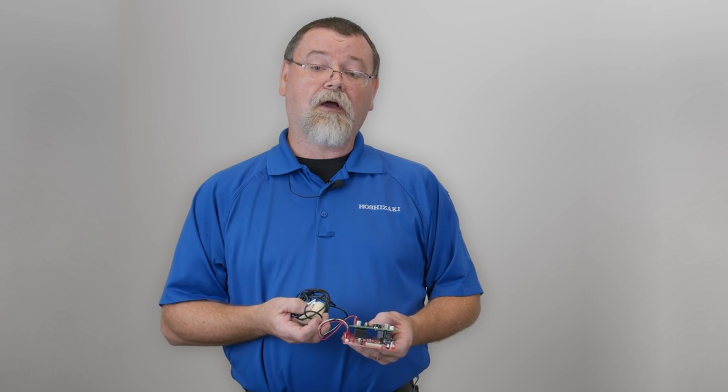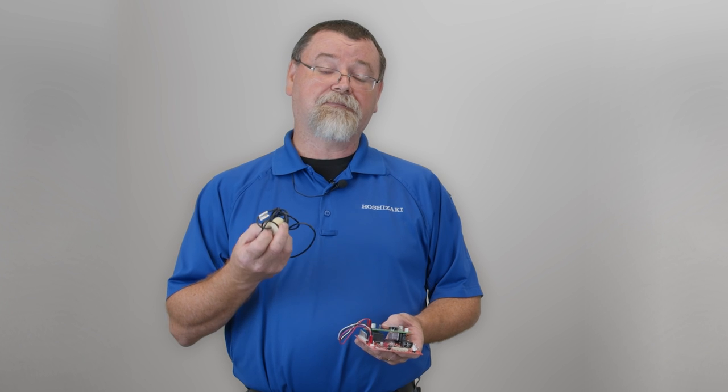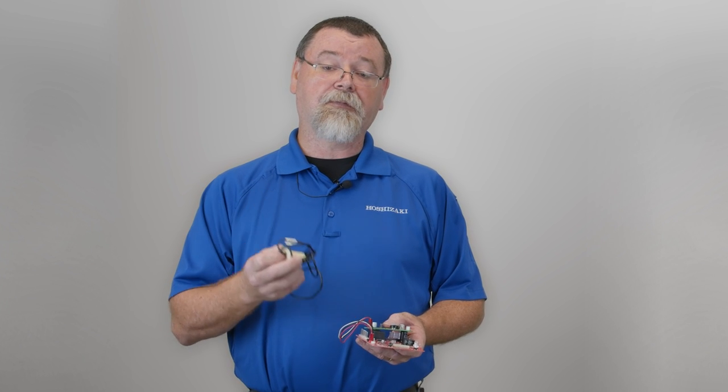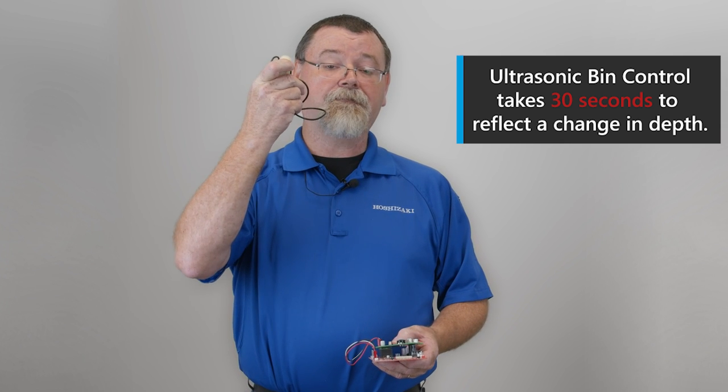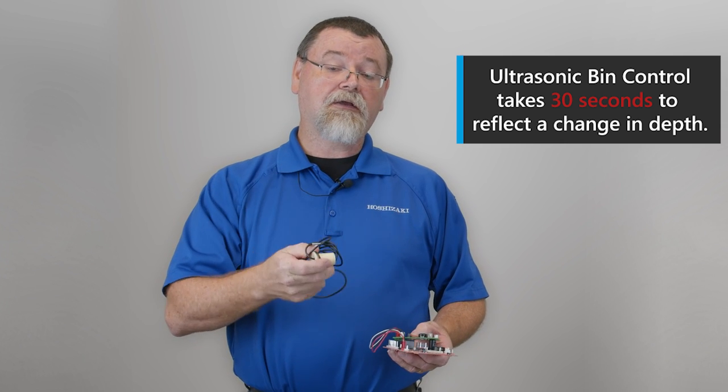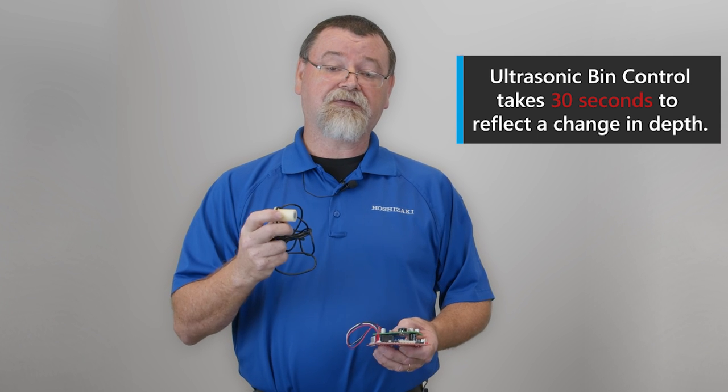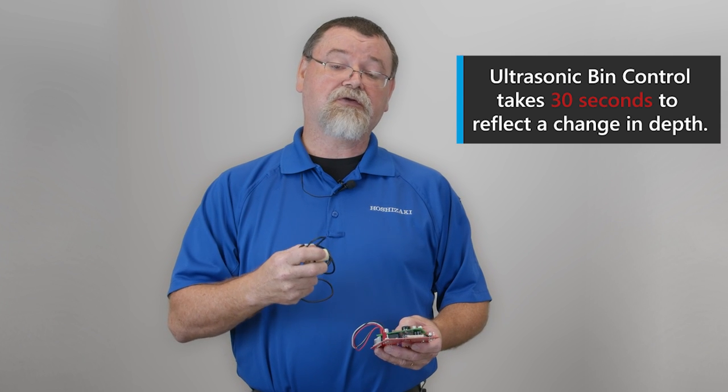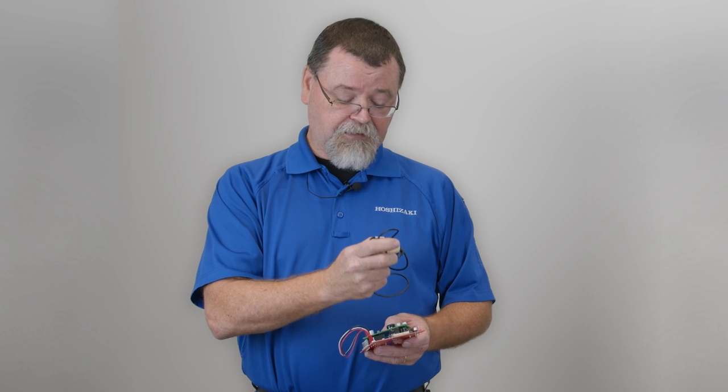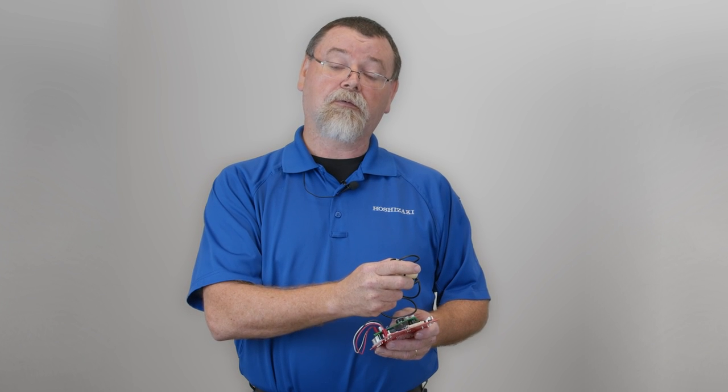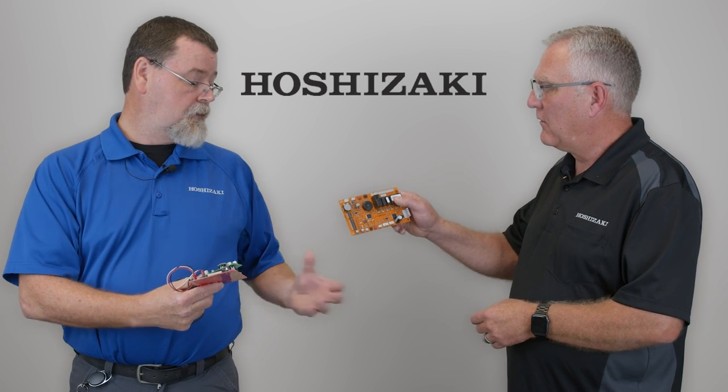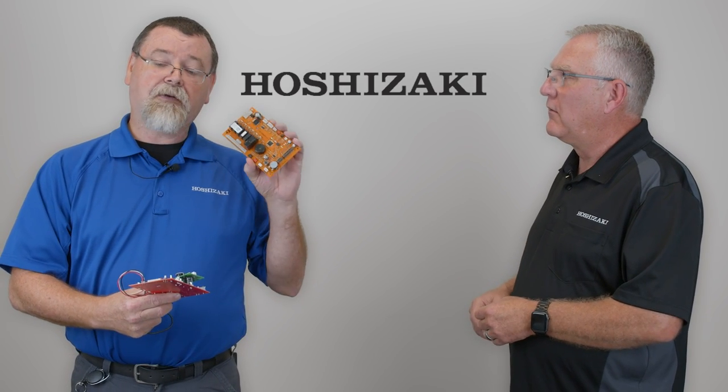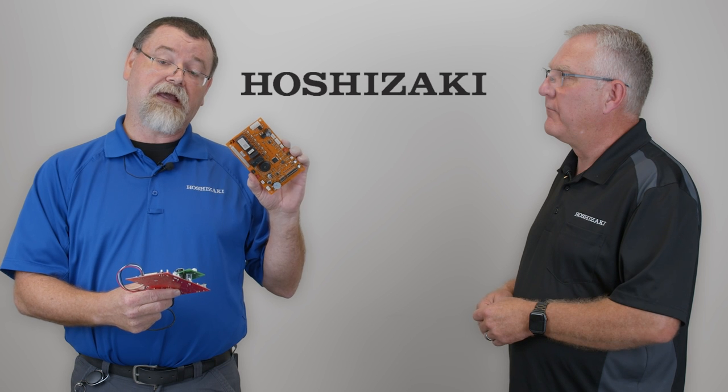So with the ultrasonic bin control on a KM, you'd want to test it basically the same way as you would a flaker. You will remove the sensor, wipe the face off, hold it up to mid-air. If the unit does not start, you may have a bad sensor, but you also want to make sure that you check the voltage coming from the connector where the bin control connects to the board, on either the driver board with the K board or the K plus board connector where the bin control attaches to.